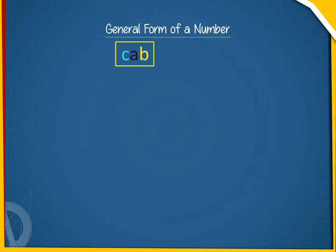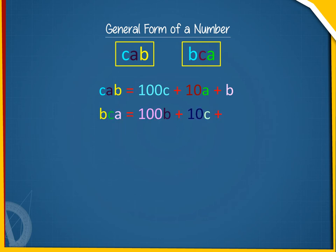We write the numbers CAB and BCA in general form as CAB equals 100C plus 10A plus B, and BCA equals 100B plus 10C plus A.